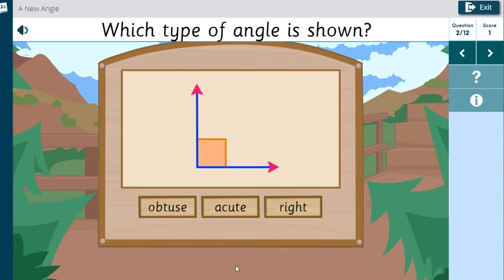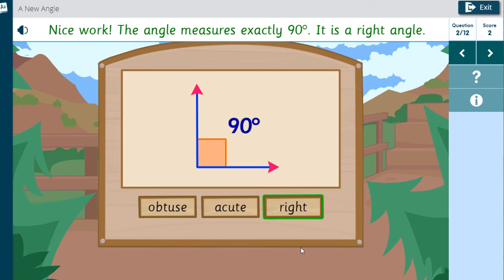Which type of angle is shown? Nice work. The angle measures exactly 90 degrees. It is a right angle.